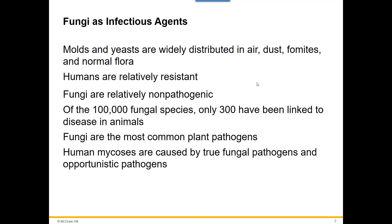There are around a hundred thousand fungal species, and only 30 to 300 of them have actually been linked to diseases in animals and humans. Fungi are the most common plant pathogens, so there are a lot of fungi that cause plant issues. Human mycoses — and anything with 'myc' in it means fungus — or fungal diseases, are caused by true fungal pathogens and opportunistic pathogens.